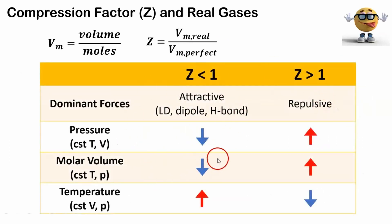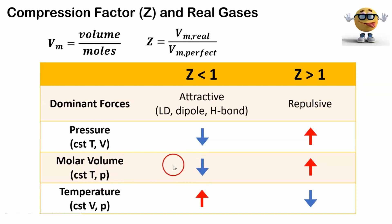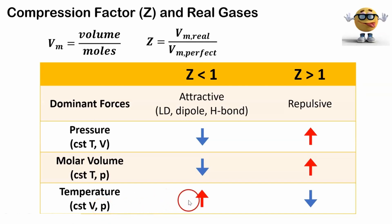I've summarized a nice little table, linked in the description if you want to print it out and use it. If Z is less than one, attractive forces are dominant — like London dispersion, dipole-dipole, hydrogen bonding. The pressure will be lower than a perfect gas under constant temperature and volume. Under constant temperature and pressure, the molar volume will be less than that of the perfect gas. In a third scenario with constant volume and pressure, the real gas will have a higher temperature — it needs a higher temperature to maintain the same pressure as a perfect gas, since that higher temperature overcomes those attractive forces.